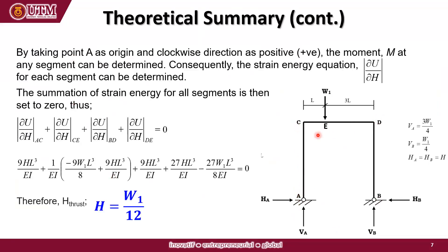Consequently, the strain energy equation dU/dH for each segment can be determined. The summation of strain energy for all segments is set to zero. Therefore, dU/dH for segment AC plus CE plus BD plus BE equals zero. From the calculation of strain energy for all segments, we get the resulting equation — you can refer to your lab manual for the details of the calculation. By solving these equations, we get the horizontal thrust H equal to W1 over 12.